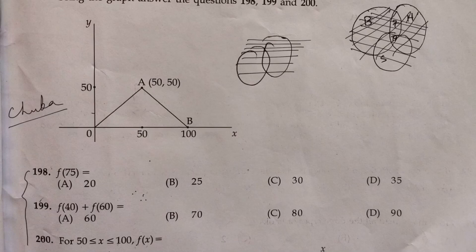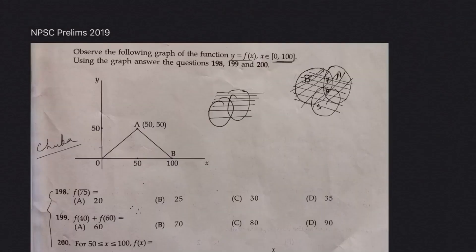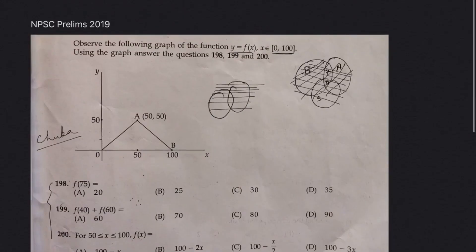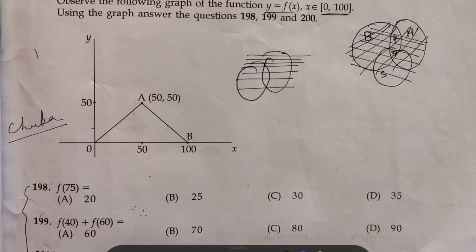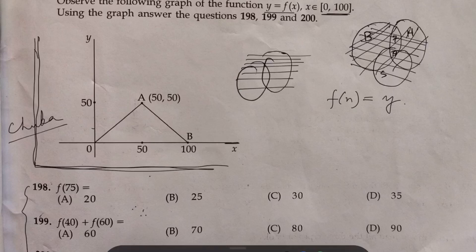We have y equals to f(x), where x should be between 0 to 100. We need to understand this graph. They've given us f(x) equals to y, or y equals to f(x). This is the x-axis and this is the y-axis.